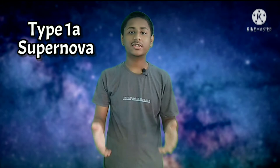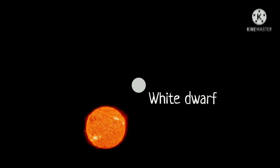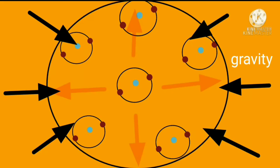A Type 1a supernova is a kind of supernova observed in a binary system of stars. In this binary system, one of the stars is a white dwarf — a stellar remnant of a dead star with a mass of less than 8 solar masses. This means a star with a mass of less than 8 solar masses will become a white dwarf after it dies. In a white dwarf, there is no nuclear fusion happening; it supports its weight using electron degeneracy pressure.